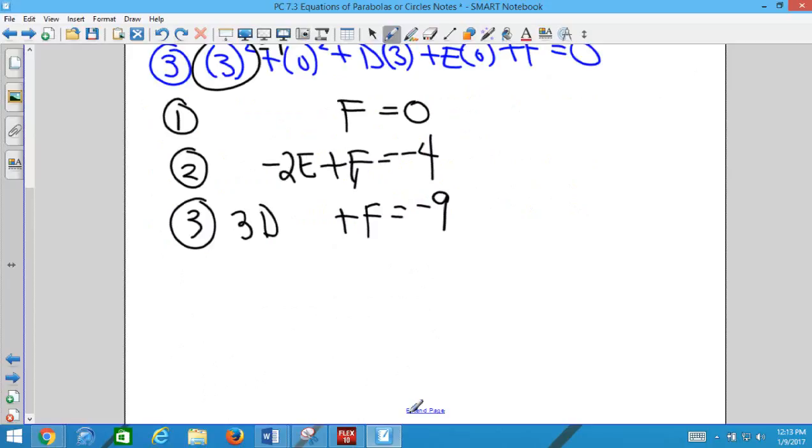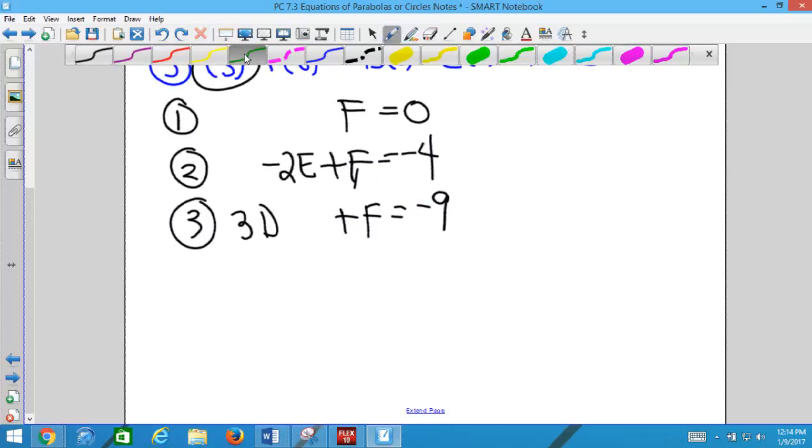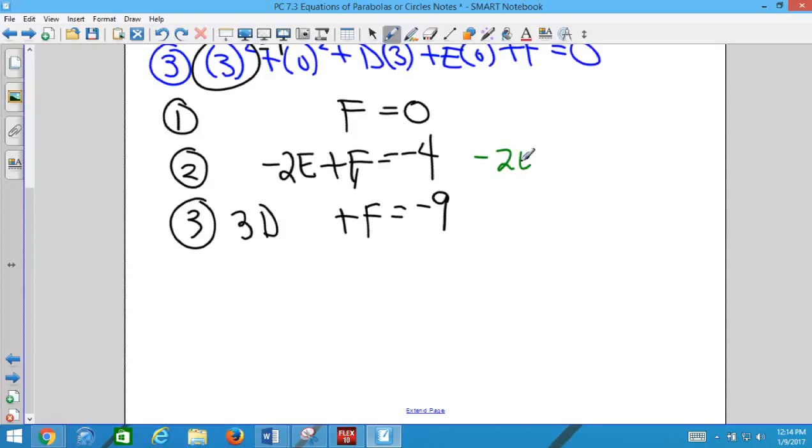And then this one's really an easy one. f is 0, so I can put that zero in here and find that e is 2. I can put that zero in for this one and find that d is -3. And then we have to write our equation.